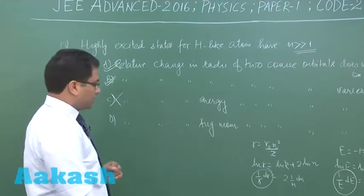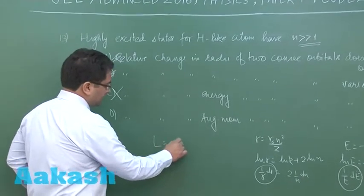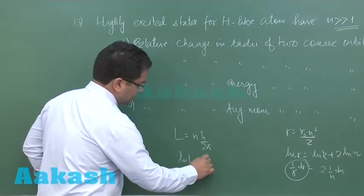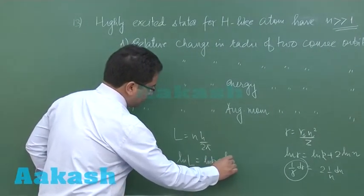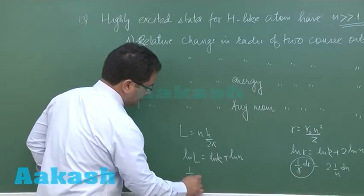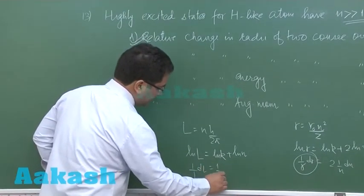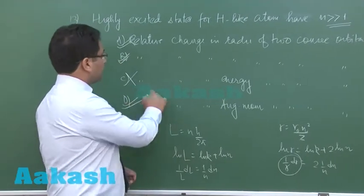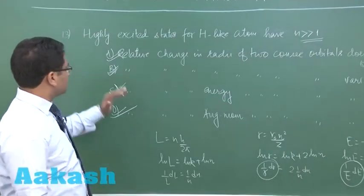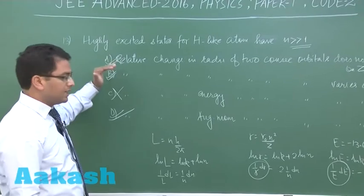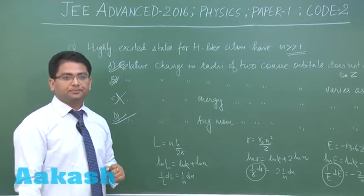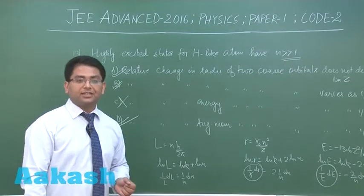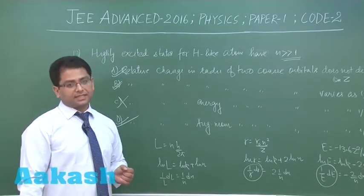And finally angular momentum, you know that angular momentum is n h by 2 pi. So you'll have log l is log k plus log n and 1 by l d l would be 1 by n d n. And that is now giving us the correct option. So this particular question, question number 13, has correct option as A, B and D. Now let's move to question number 14, with that we would enter into another section, section 3.